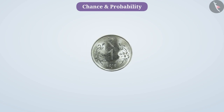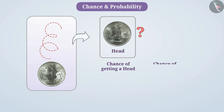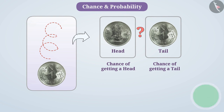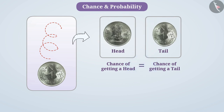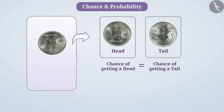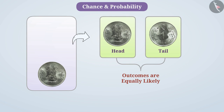Now think, if we toss a coin, whether the chance of getting a head will be greater or the chance of getting a tail will be greater. On tossing a coin, the chance of getting a head is equal to the chance of getting a tail. We say that the outcomes are equally likely.